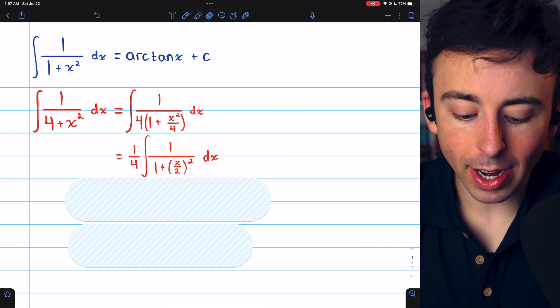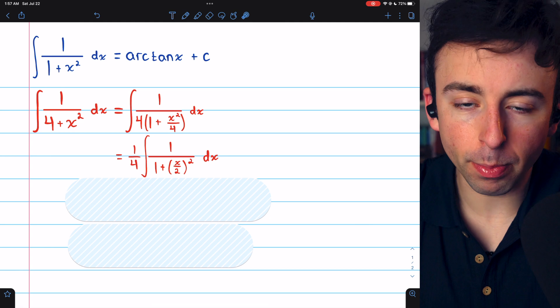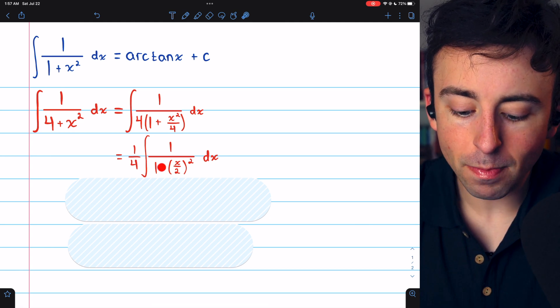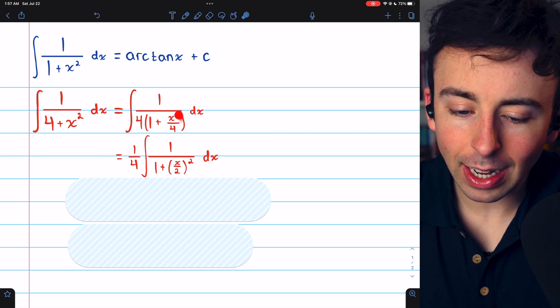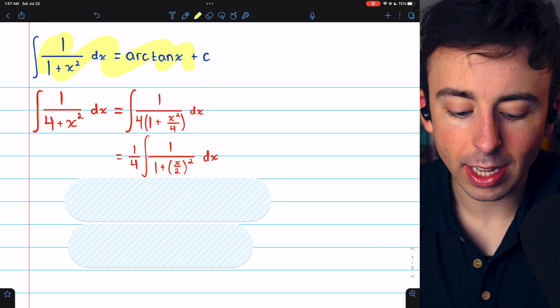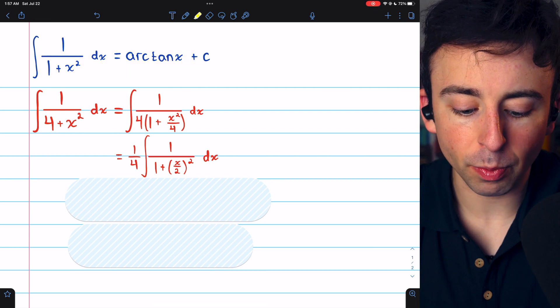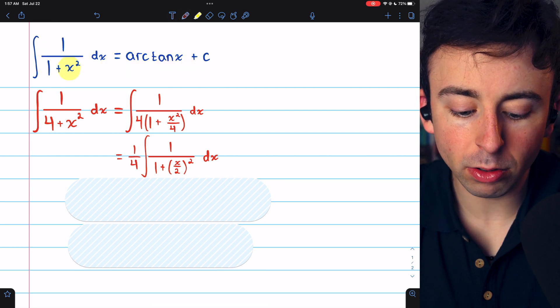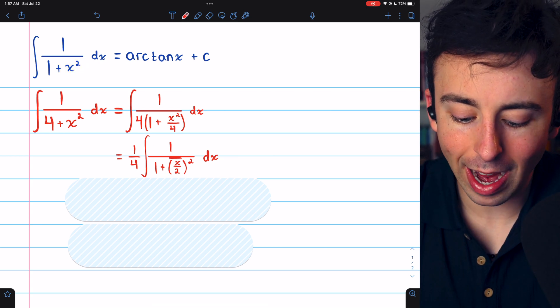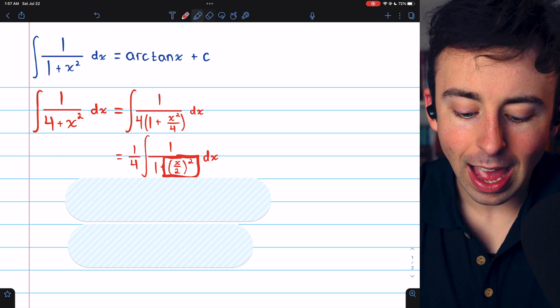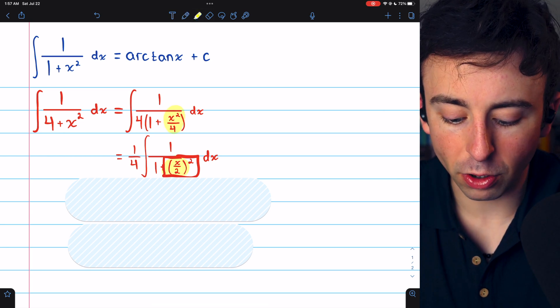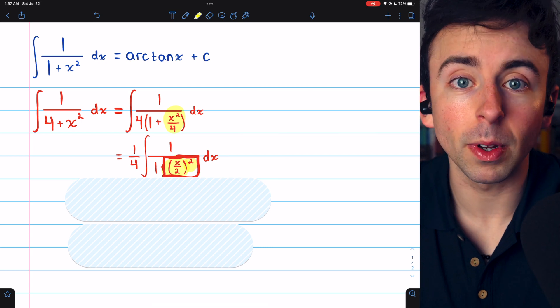Now we can rewrite this with the 1 fourth pulled out of the integral. And then 1 over 1 plus, we had x squared over 4, but looking at the arctan formula, we would like to write that expression as a thing squared. And we can write x squared over 4 as a thing squared like this. x squared over 4 is the same as x over 2 squared, and that's much nicer.